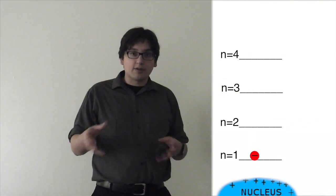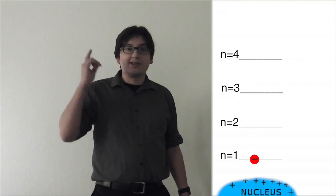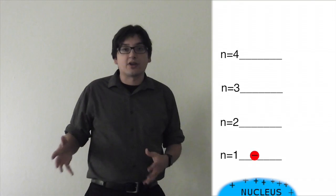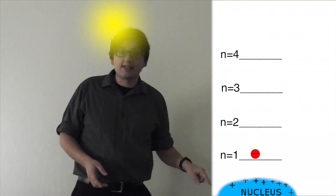That's why things glow, or give off light when they're energized. That's why the lights, the sun, other things that are glowing when they're hot, that's what they're doing. The electron goes up, absorbs energy, goes back down, releases energy.